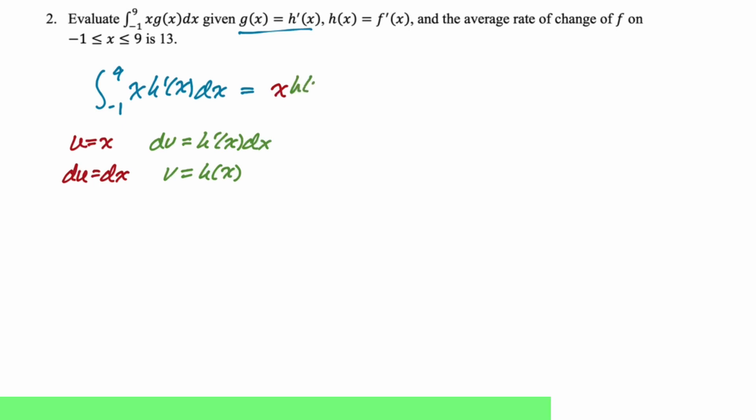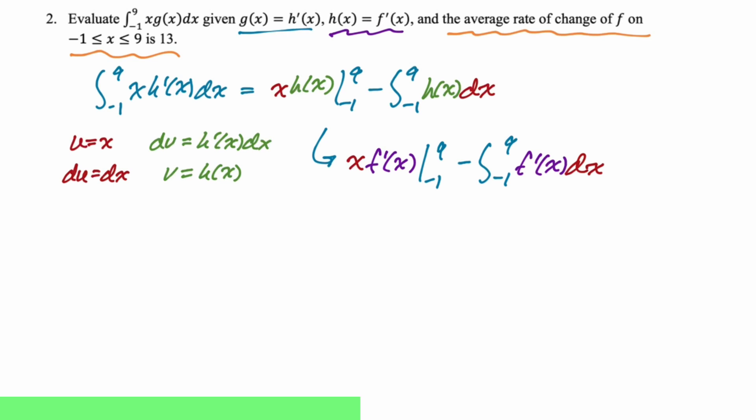So we can get started and just kind of write it out. So it'll be x h of x from negative one to nine, and then minus the integral from negative one to nine of h of x dx. So there's kind of two problems at this point. I know that h of x is f prime, so I can say that this is going to be x f prime of x from negative one to nine. Now, an issue there is that I don't know values of f prime, so I can't really do much with that other than write it down using notation. And then I changed that second h into f prime as well.